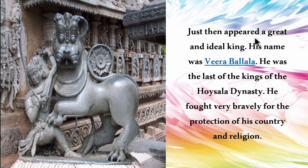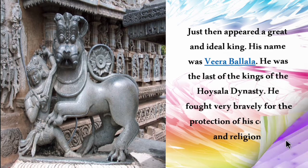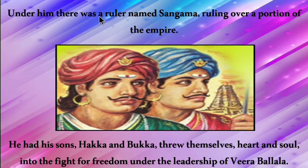Then appeared a great and ideal king named Veerabalala, the last king of the Hoysala dynasty. He fought very bravely for the protection of his country and religion against the Muslim invaders. Under him, there was a ruler named Sangamma ruling over a portion of his empire. Sangamma had two sons named Harihara (also called Hakka) and Bukka.